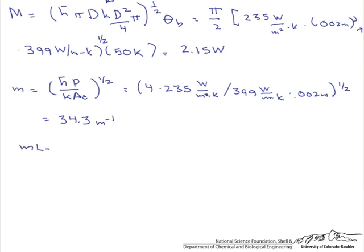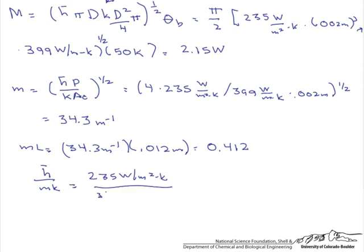So our M L is 34.3 inverse meters times our length, which is 0.012 meters. Actually, what we should do is make that a corrected length and add to it D over 4. But with significant figures, it is not going to change anything. And so our M L is 0.412. H divided by m times K is 235 watts per meter squared K divided by that 34.3 inverse meters times 399 watts per meter K. And that equals 0.0172.